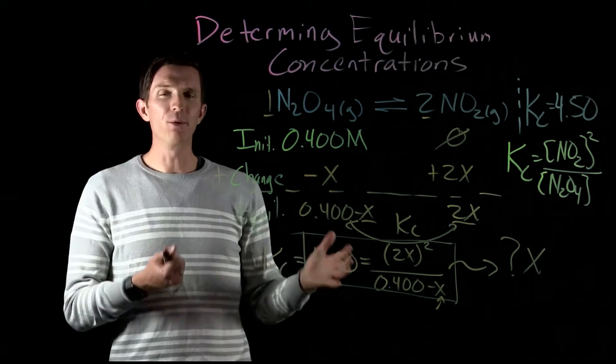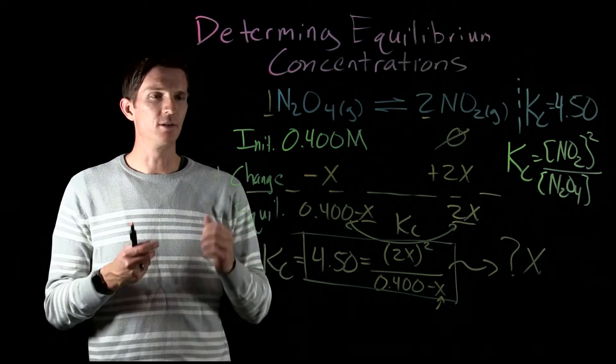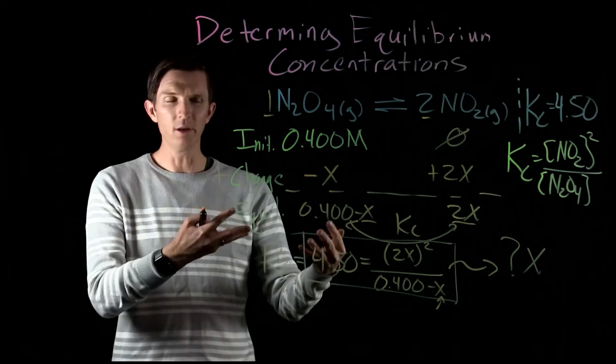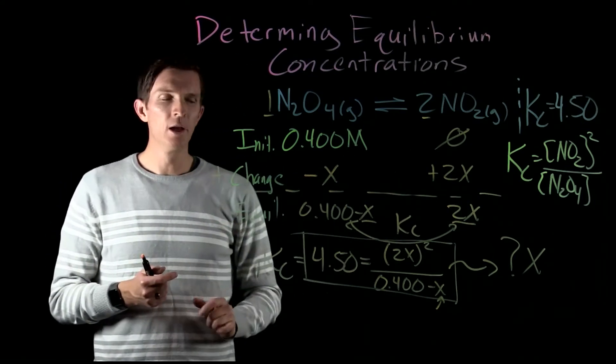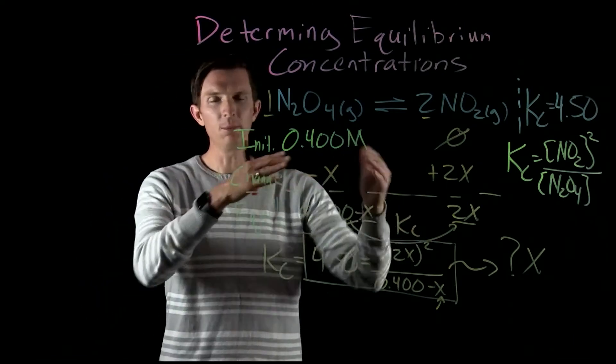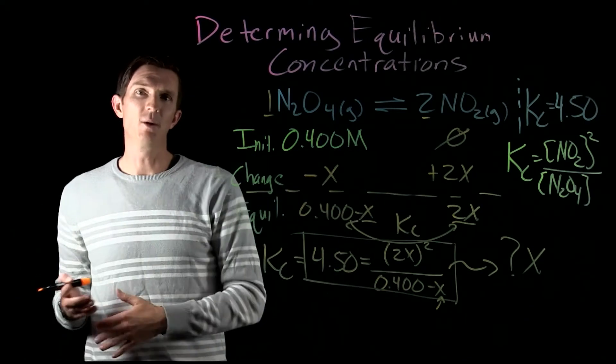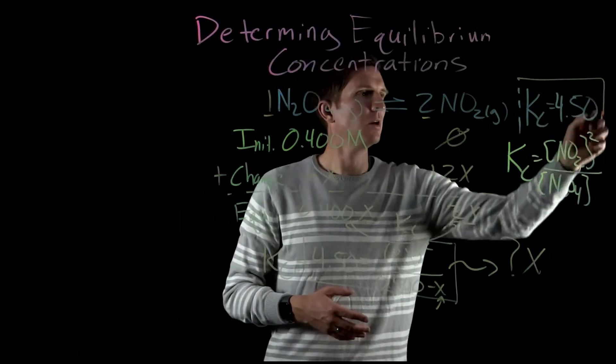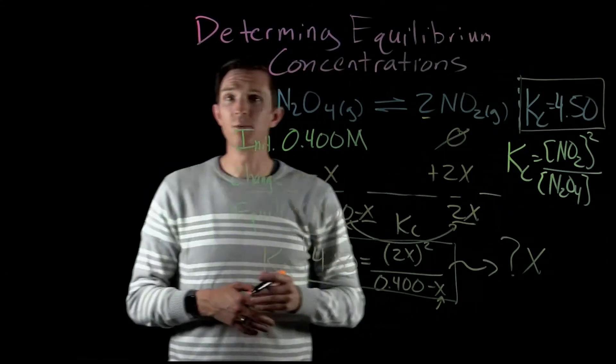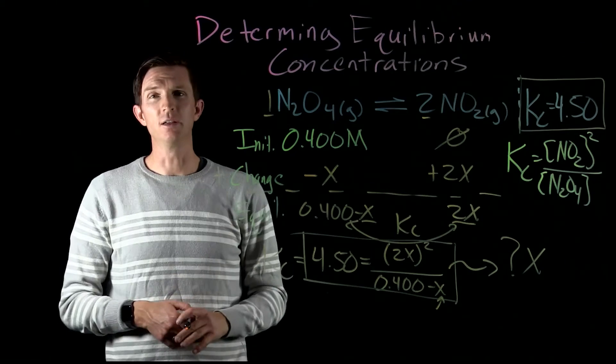So now remember when we're looking at our equilibrium concentrations, think about what do I know that I start with, how can I quantify what our changes or the ratio of our changes, and our equilibrium will always be the sum of what we started with and how much we change by. And then that's going to correspond back to the known relationship between products and reactants, our Kc value.